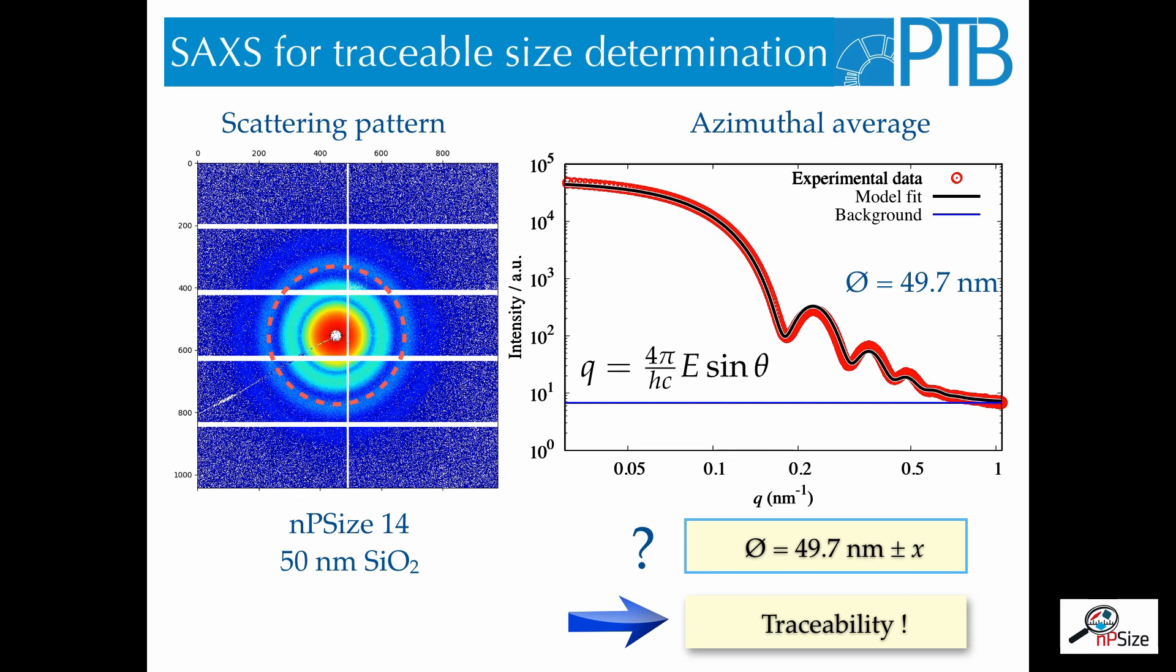Now the question remains, how accurate is this value? What is the uncertainty of this diameter? To answer this question, we need to make the measurement traceable.